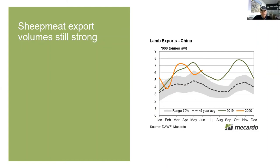Even though we hear that China is angry at Australia about one thing or another and COVID is a problem, we've got to fall back to the basic position that there is good demand for red meat — and this evidence is supporting that.